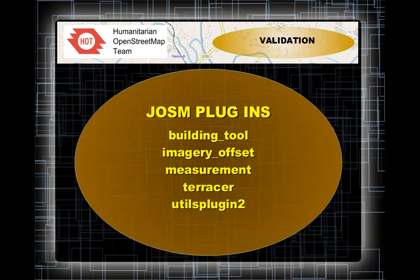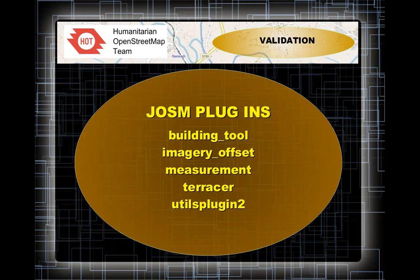These are the JOSM plugins you will be adding which will really help you do the job properly. The building tool will be the most extensively used, so make sure you've got that plugin loaded. The imagery offset plugin is also quite important and helps you quickly and easily do your offsets. The measurement tool comes in very handy — you can measure the width of a road to determine if it's a path or a road. A road would be 1.8 meters or wider; if it's less than 1.8 meters it'll be difficult getting a four-wheeled vehicle down it.